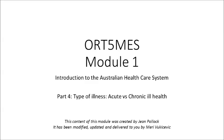Hi and welcome to part four of module one called Type of Illness. In this module we're going to be overviewing acute versus chronic ill health, now that we understand the different levels of healthcare: primary, secondary, tertiary and quaternary. When attempting equitable funding allocation in the face of demand in Australia, it becomes necessary to be aware of the different types of diseases that need to be supported. The following slides will demonstrate the relative divisions that can be made between acute and chronic disease processes.